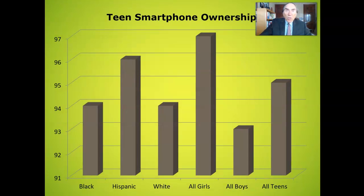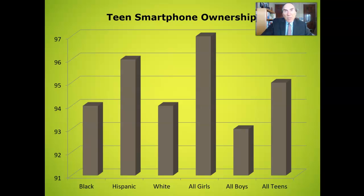However, looking at teen smartphone ownership data does not show that parity. Some 95% of teens say they own or have access to a smartphone, which represents a 22 percentage point increase from the 73% of teens who reported ownership in 2015. Thus, smartphone ownership is nearly universal among teens of all races, ethnicities, genders, and socioeconomic backgrounds.